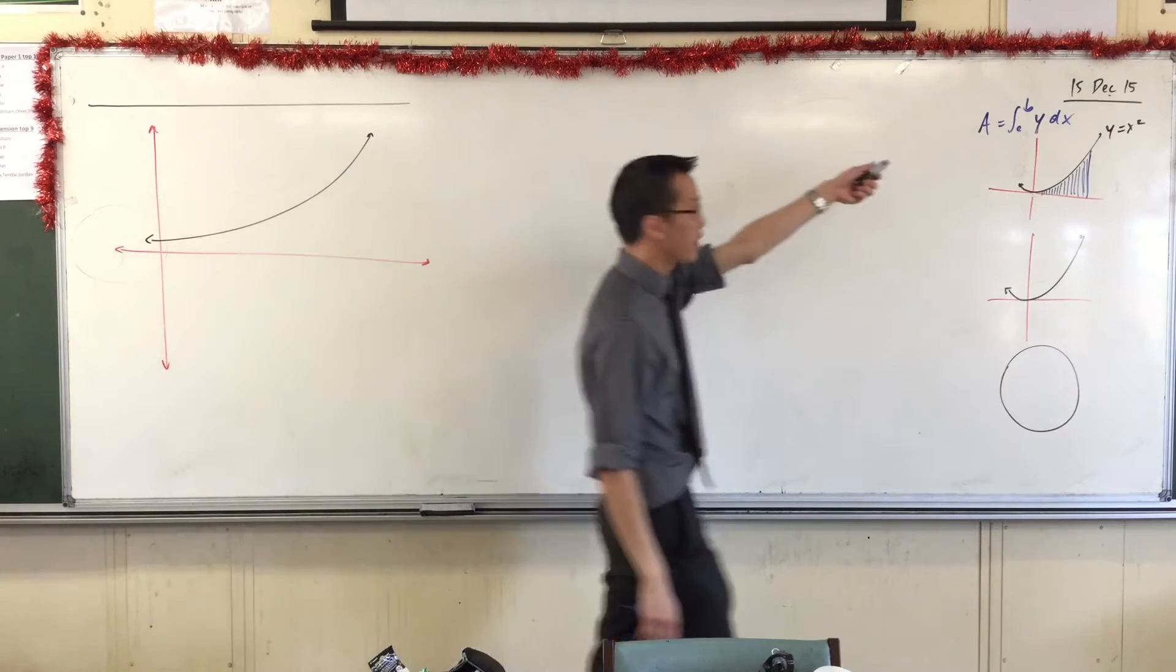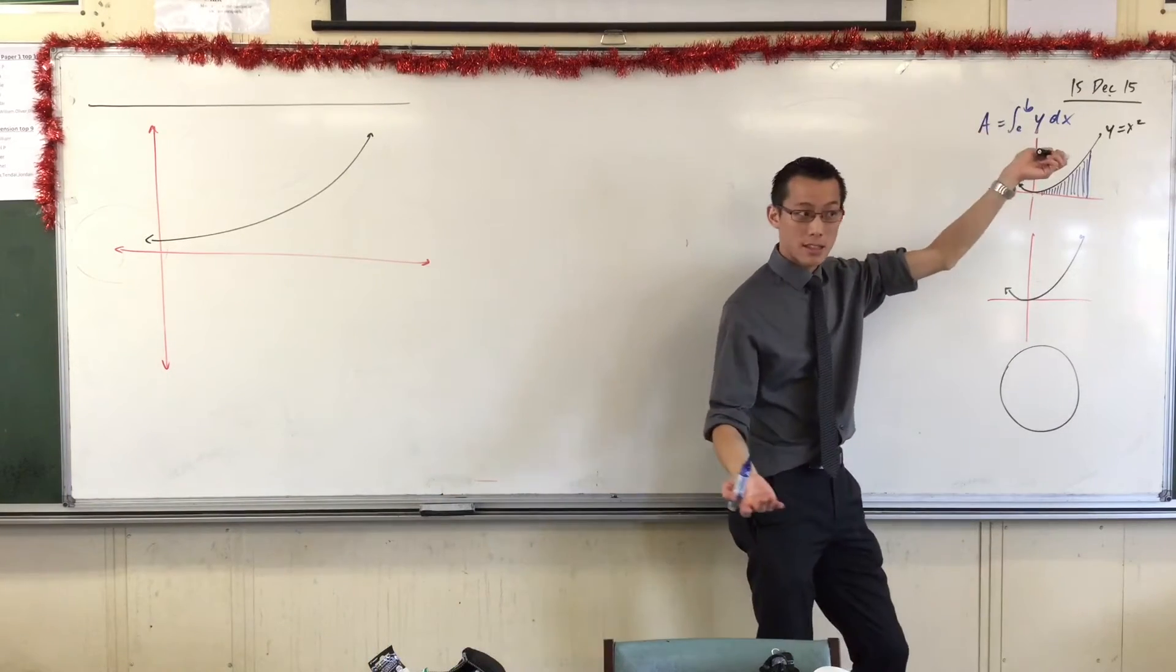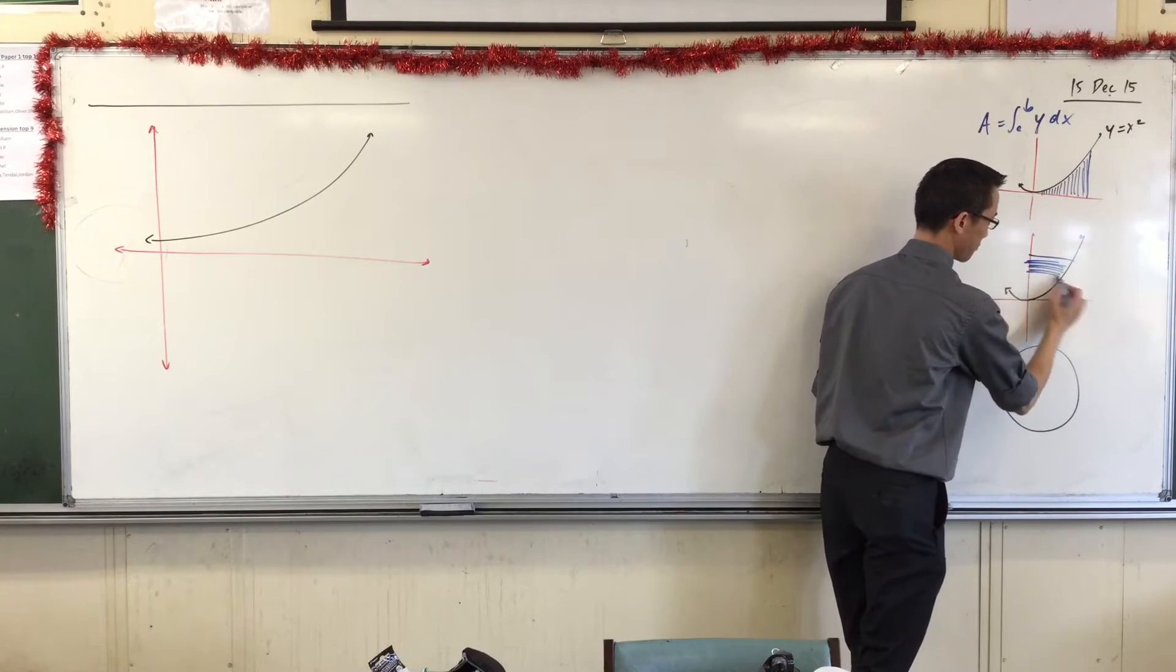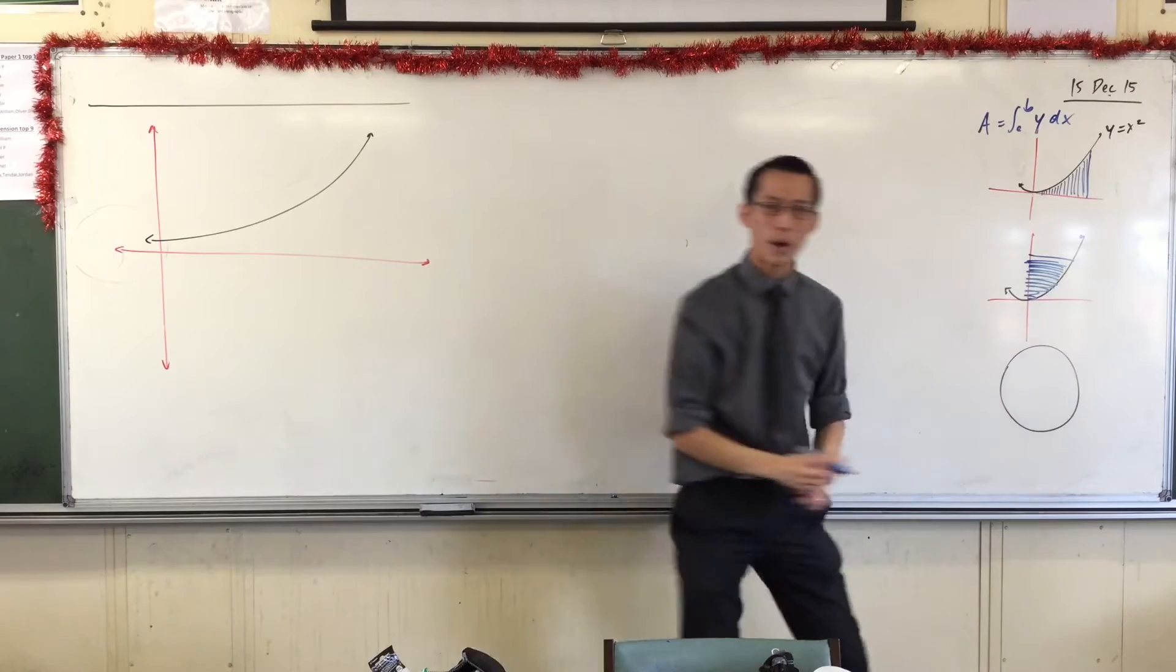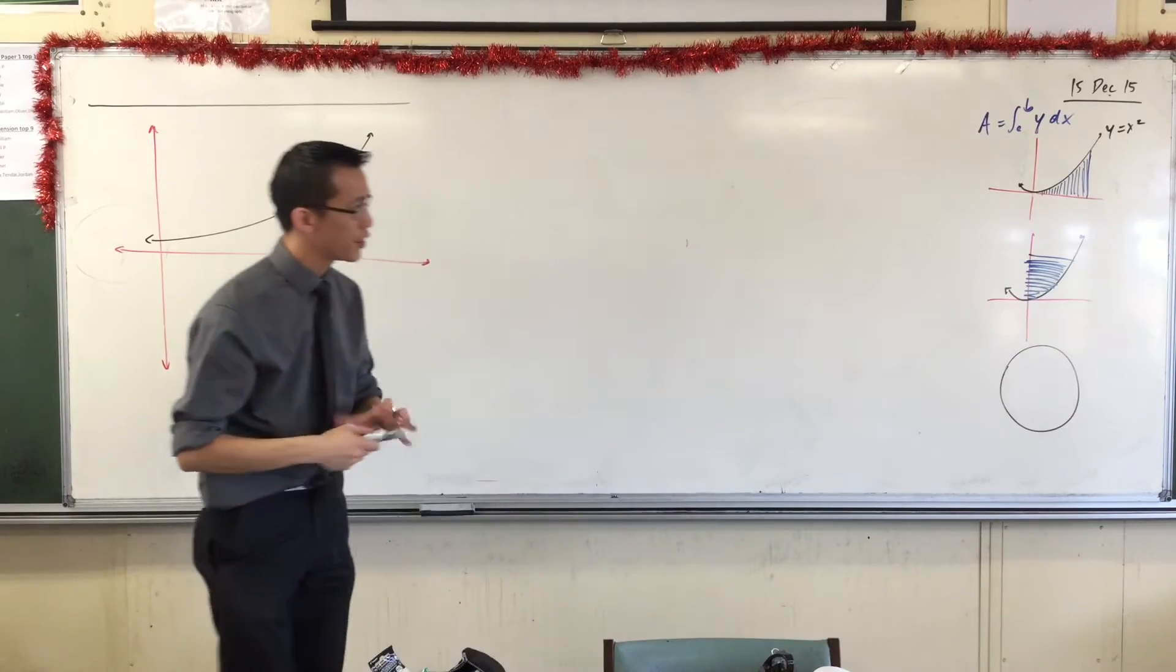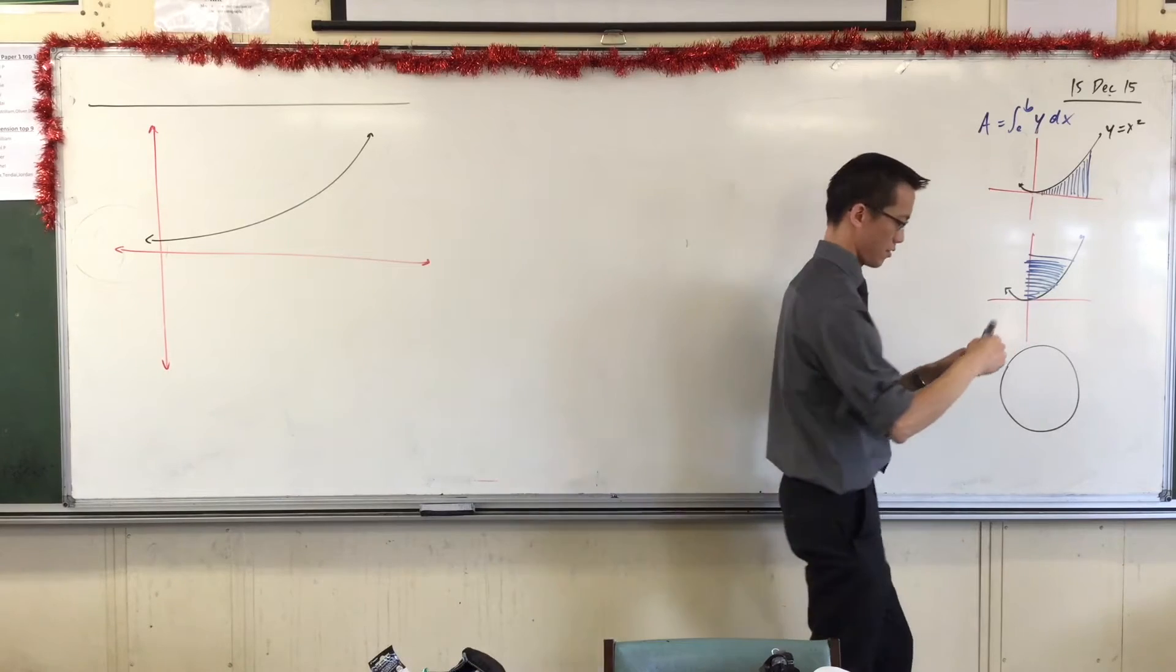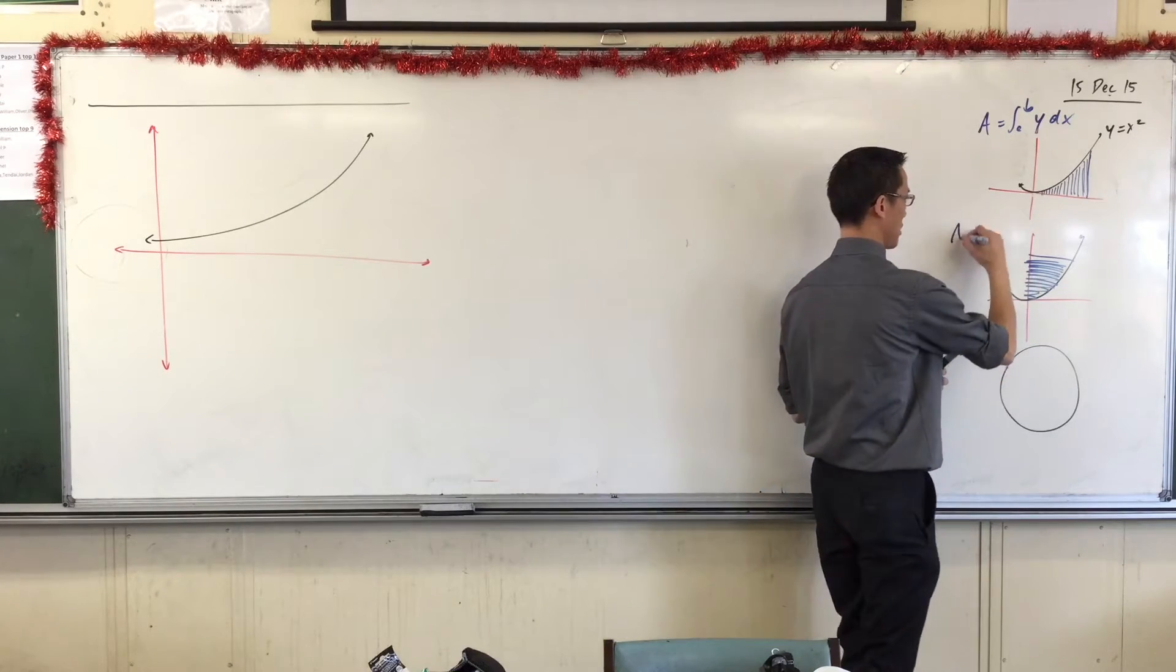Now, that was one thing we could do. You could add up other things as well, though. You don't have to have rectangles that are upright, you could have rectangles like this that are sideways. Now I would form a different integral to find this area.